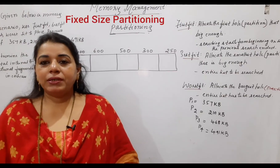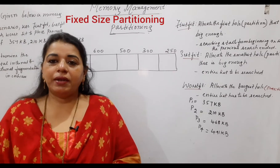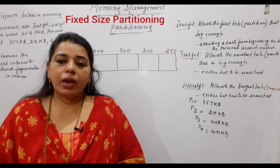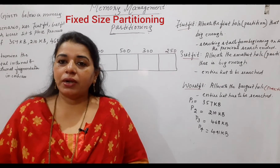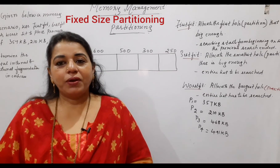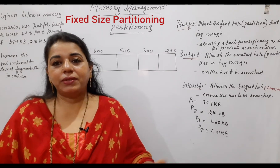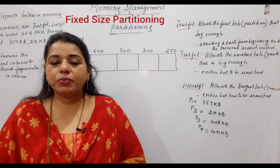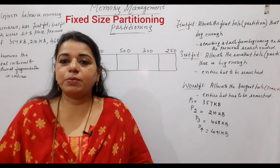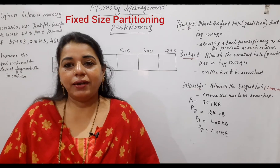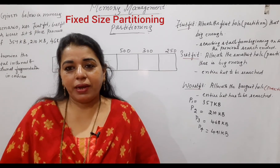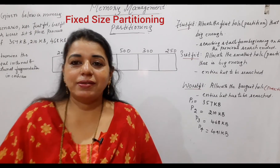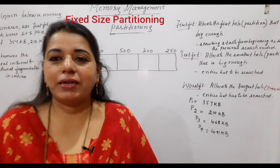In the previous session we have seen two types of memory allocation methods: contiguous and non-contiguous. In the contiguous method there are two different types — one is fixed size partitioning and the other is variable size partitioning.